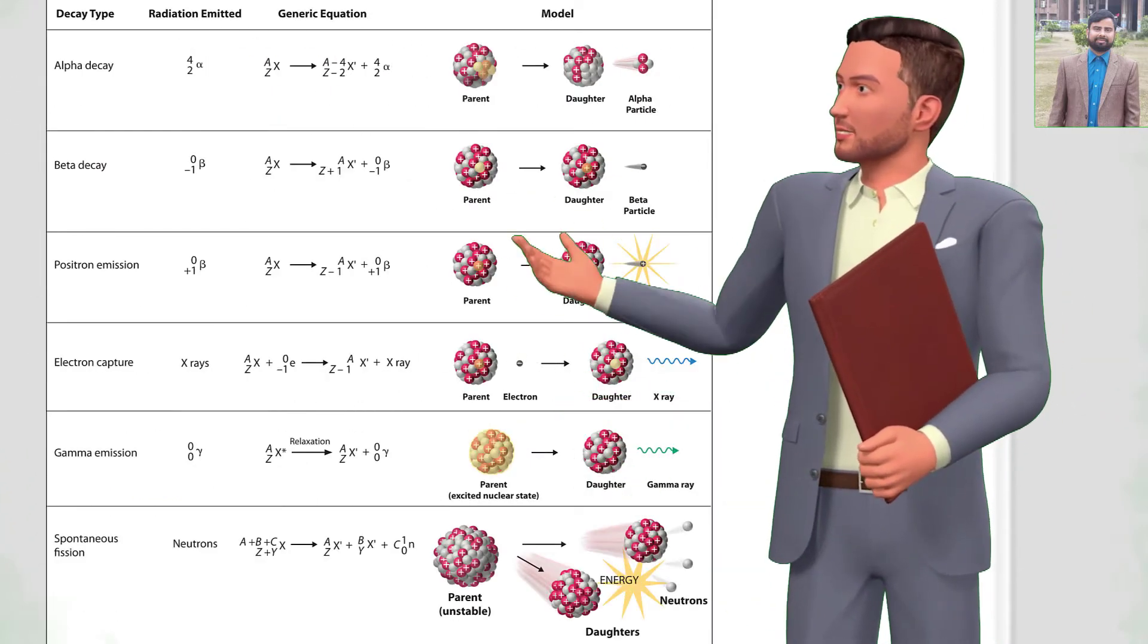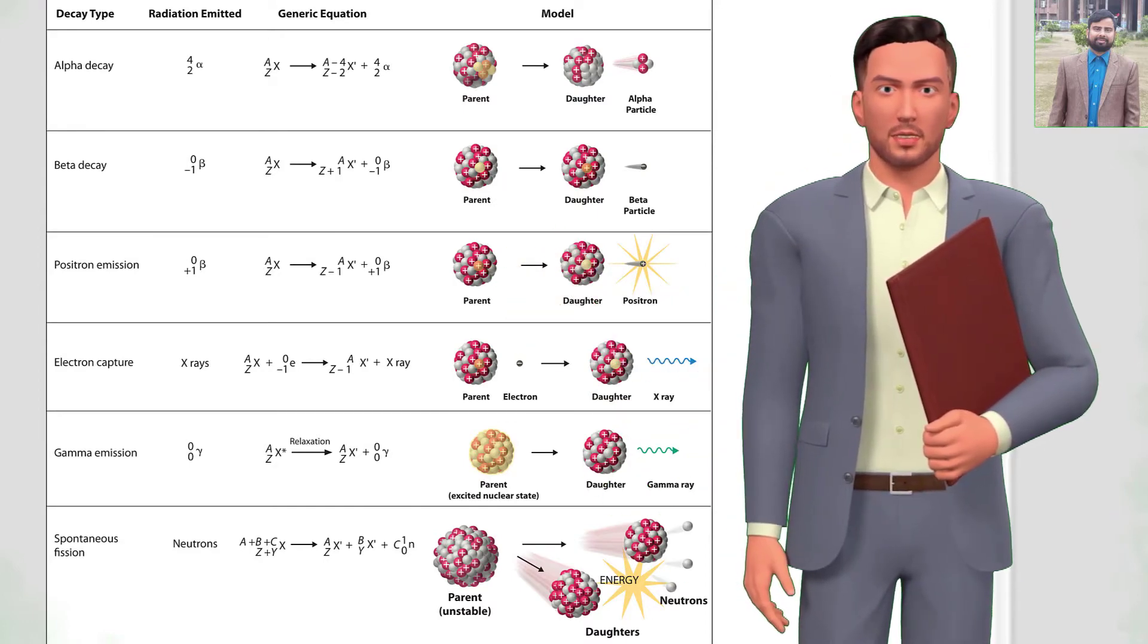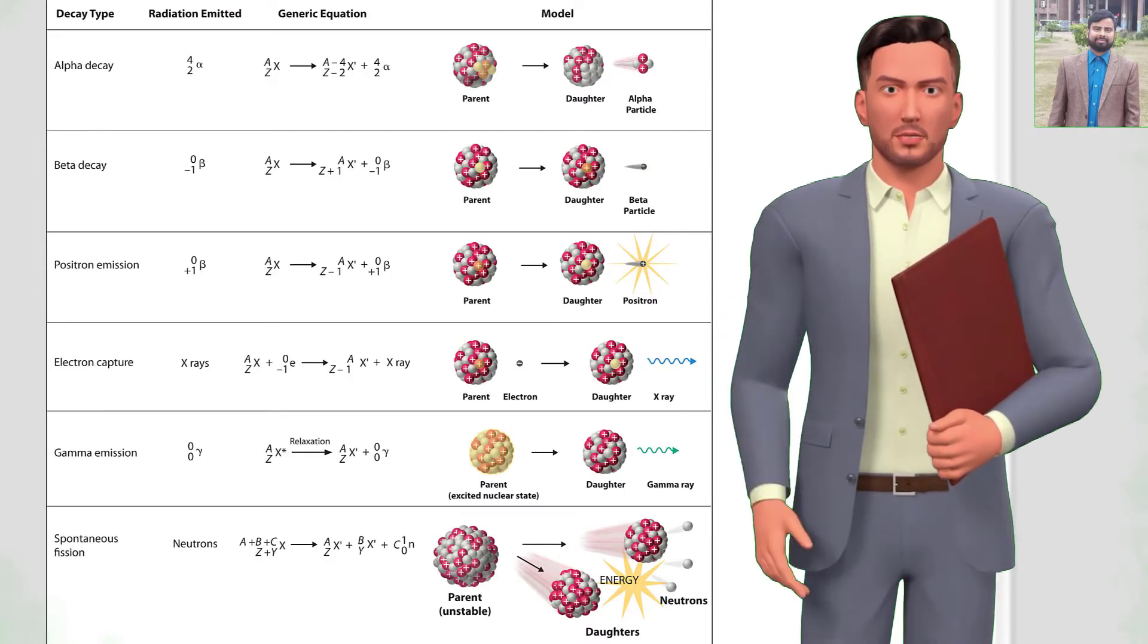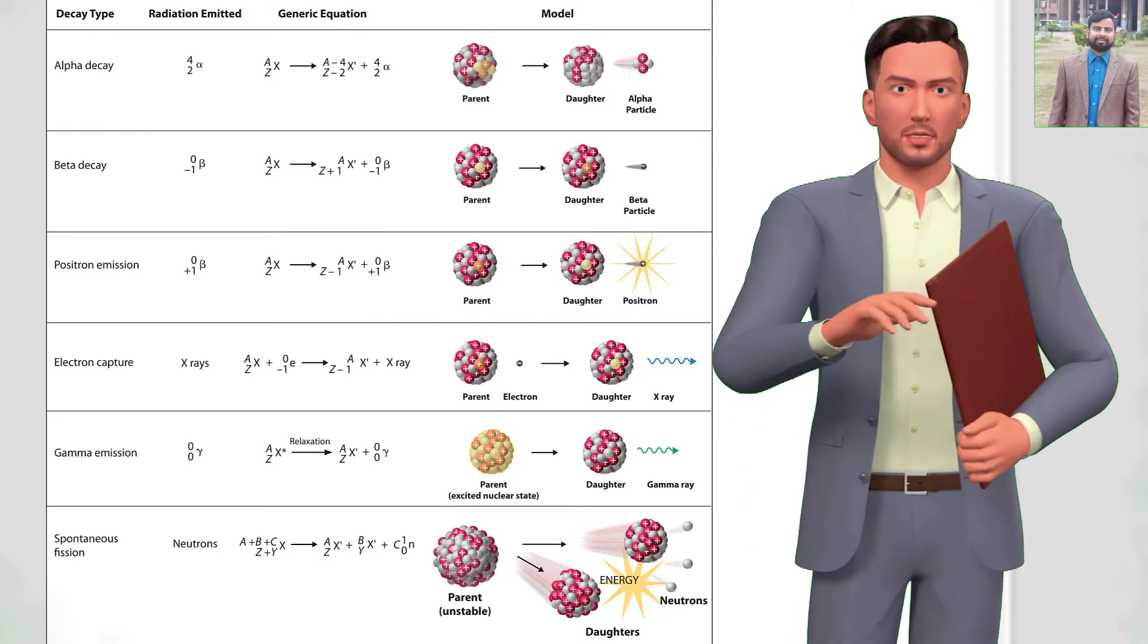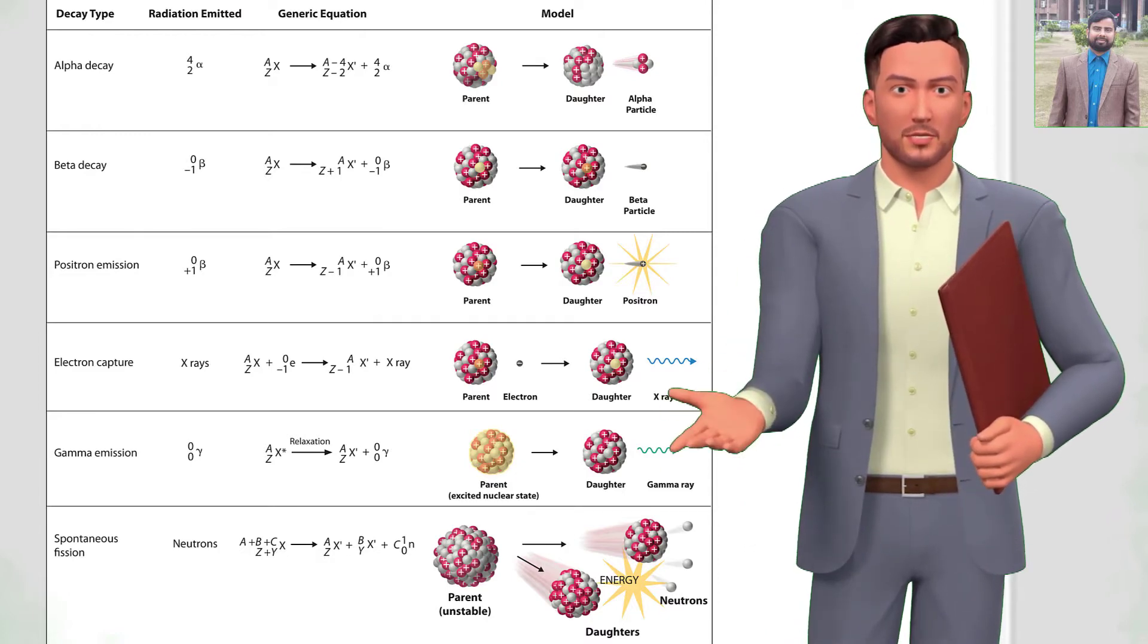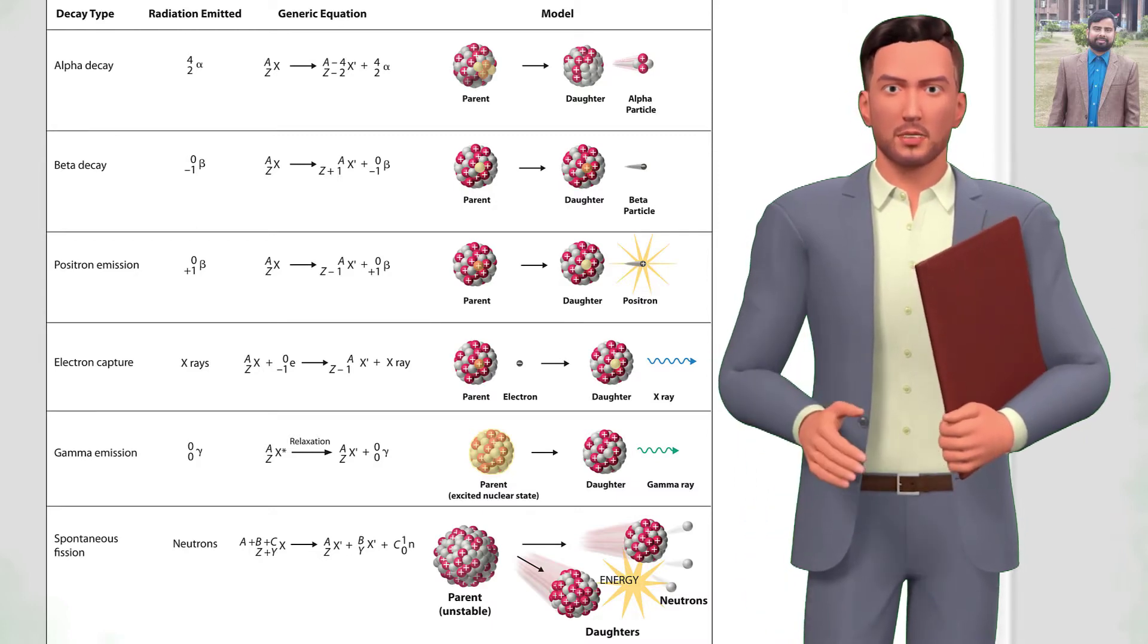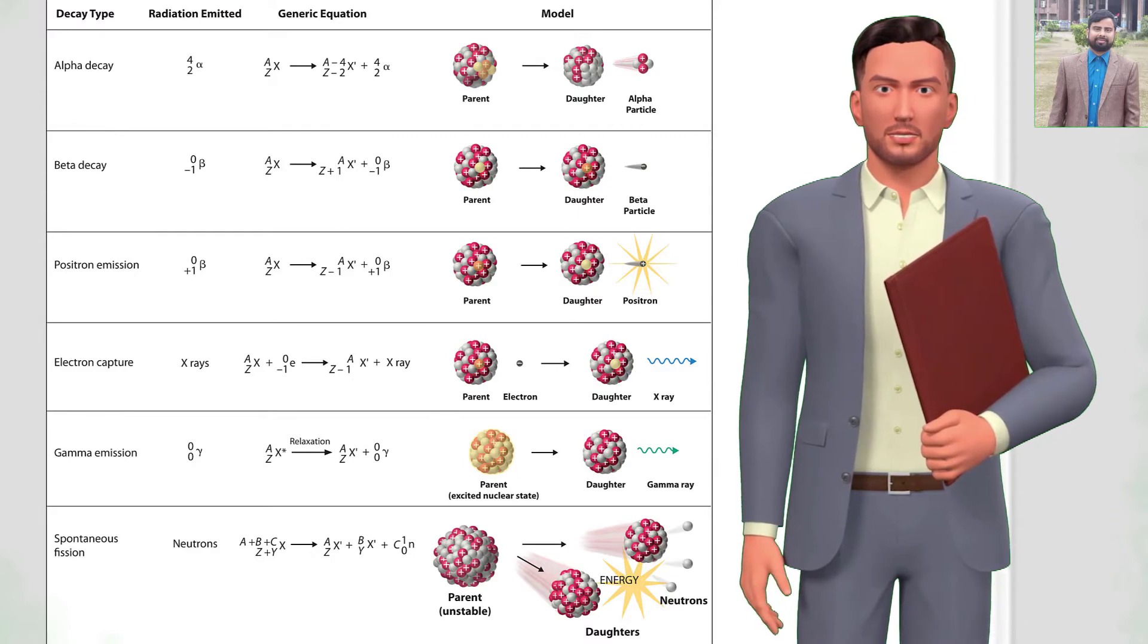Beta radioactivity: beta particles are high energy, high-speed electrons or positrons emitted by certain types of radioactive nuclei such as potassium-40. The beta particles have greater range of penetration than alpha particles, but still much less than gamma rays. The beta particles emitted are a form of ionizing radiation also known as beta rays. The production of beta particles is termed beta decay.